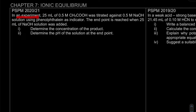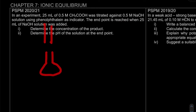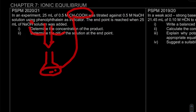In an experiment, 25 mL of 0.5 molar of acid CH3COOH, or ethanoic acid, was titrated against 0.5 molar sodium hydroxide solution using phenolphthalein as indicator. The end point is reached when 25 mL of sodium hydroxide solution was added. In our conical flask we have our acid, and in our burette we have our sodium hydroxide.